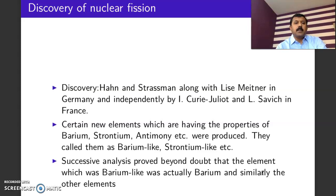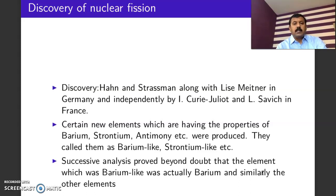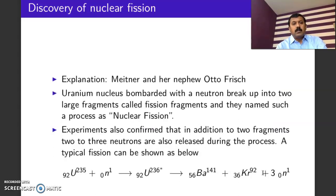This work was later taken up by Hahn and Strassmann and other groups. They noticed that the new elements formed during this process had properties similar to elements in the middle of the periodic table, just like barium, strontium, antimony, etc. They called these new elements barium-like and strontium-like nuclei. But after carrying out a series of analyses, they confirmed that these were actually barium and strontium — meaning that heavy uranium, when bombarded with a neutron, produces elements in the middle of the periodic table.